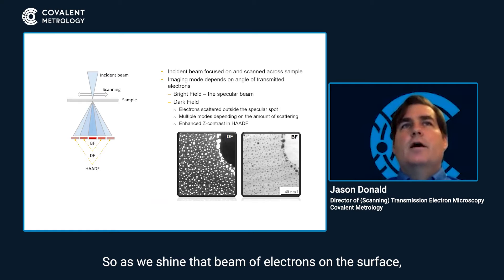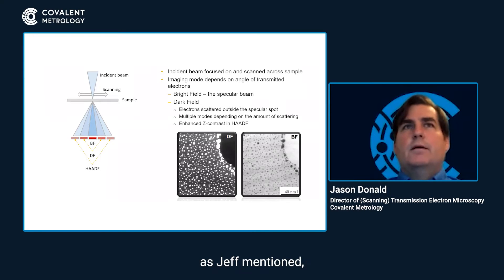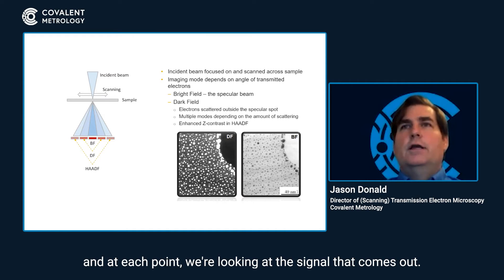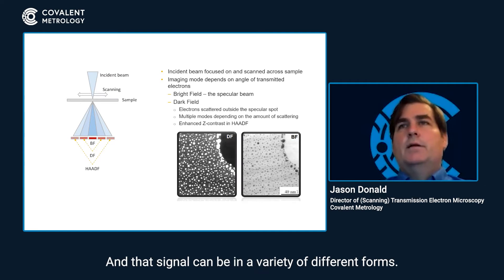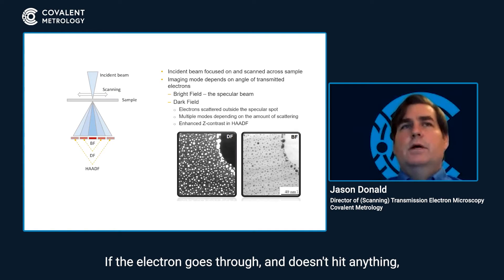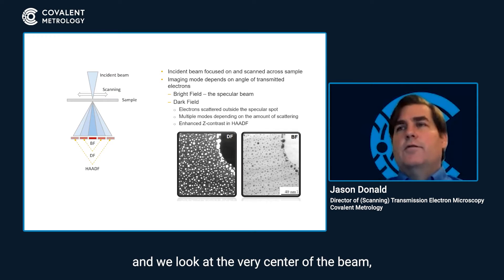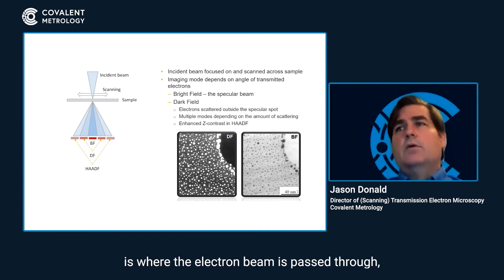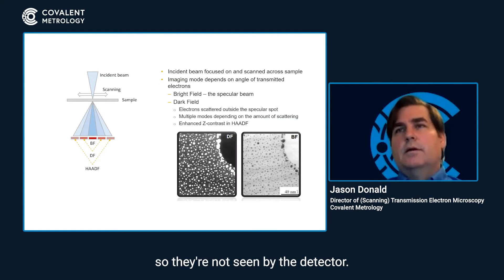As we shine that beam of electrons on the surface, we're actually rastering it right and left, up and down in a pattern. At each point, we're looking at the signal that comes out, and that signal can be in a variety of different forms. If the electron goes through and doesn't hit anything, and we look at the very center of the beam, we get what's called a bright field image. Where it's bright is where the electron beam has passed through, and where it's dark is where we see scattering — those electrons were knocked out of the path and are not seen by the detector.